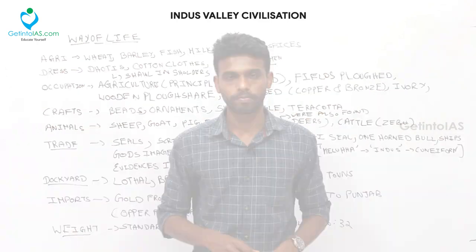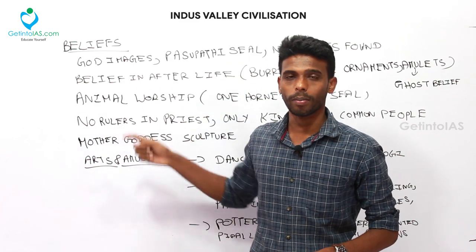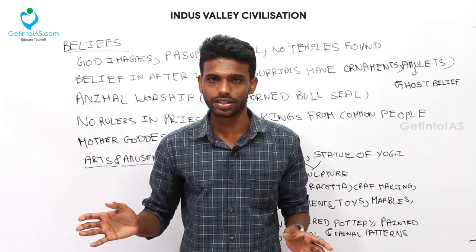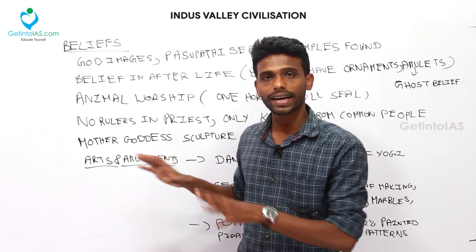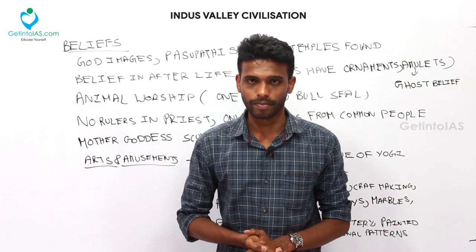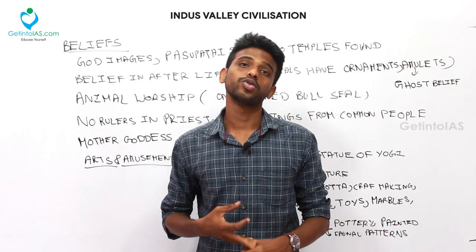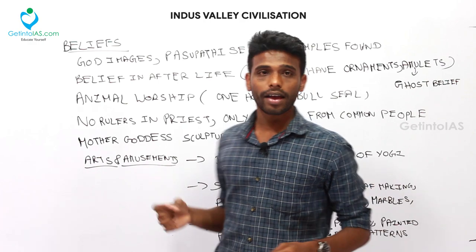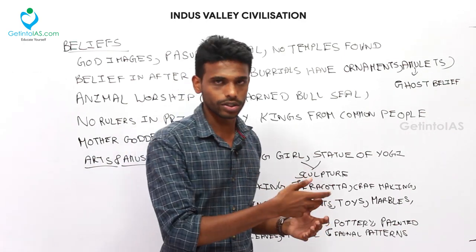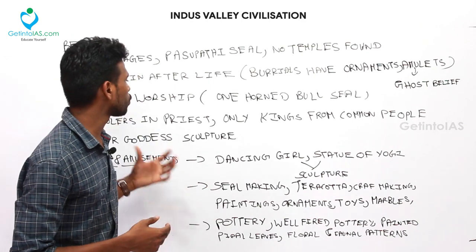Now covering the beliefs of Indus Valley people. They believed in gods, worshipped animals, and believed in ghosts — evidenced by the use of amulets, which were devices used for protection from evil. A sculpture of the Mother Goddess was found, showing people believed in gods. Scripts mentioning gods suggest people used divine powers for protection.